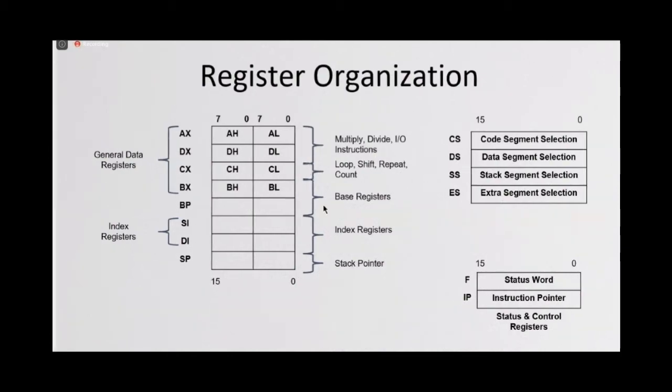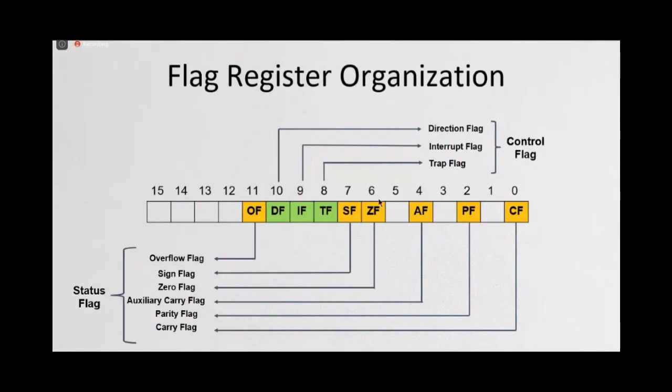So in the next slide, this is about the flag registers and the flag register organization. So basically, flag register is a 16-bit register, and in this slide we can see there's the six status flags and the three control flags summing up to a total of nine flags in this 80186 processor.